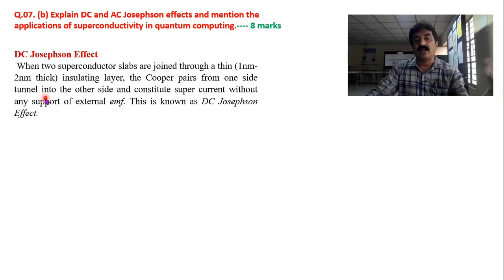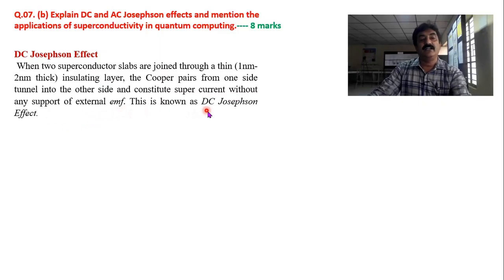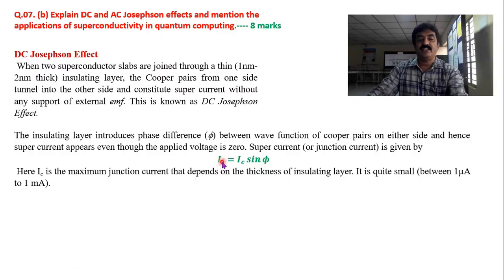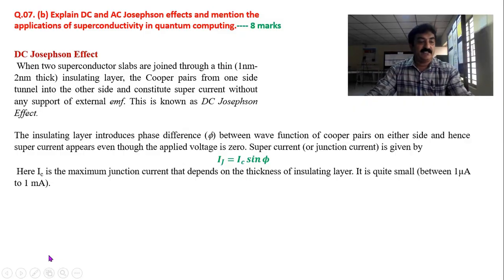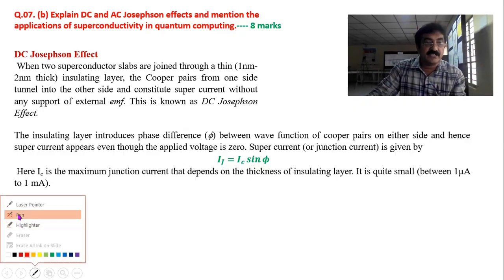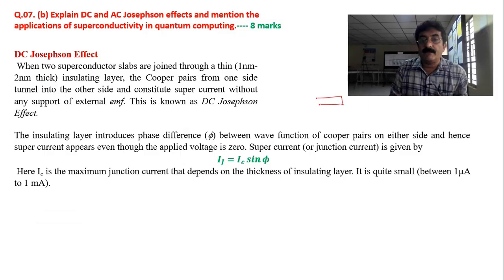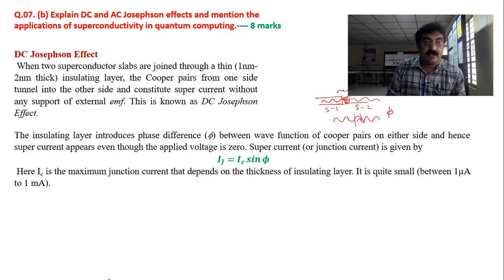Cooper pairs from one superconductor tunnel through the insulating layer into the other superconductor, producing a supercurrent without any EMF. This is the DC Josephson effect. The junction current or supercurrent is given by IJ = IC sin φ, where φ is the phase difference between Cooper pairs traveling from one superconductor to the other. This phase difference depends on the thickness of the insulating layer.